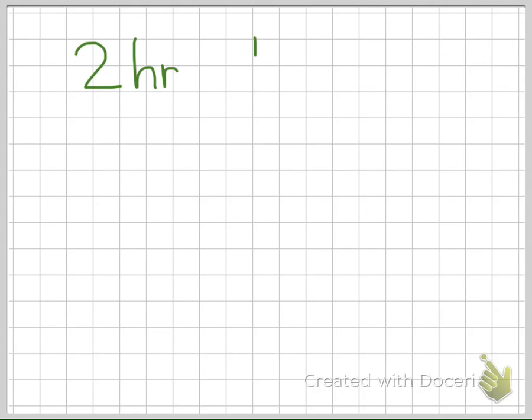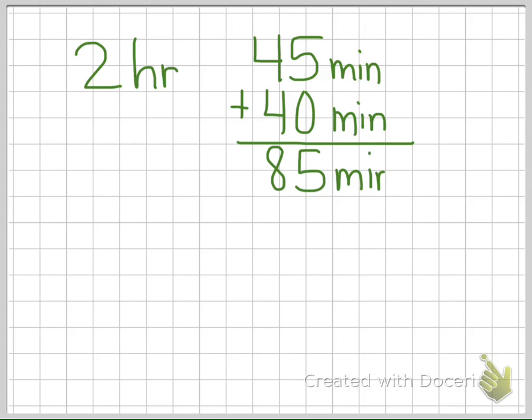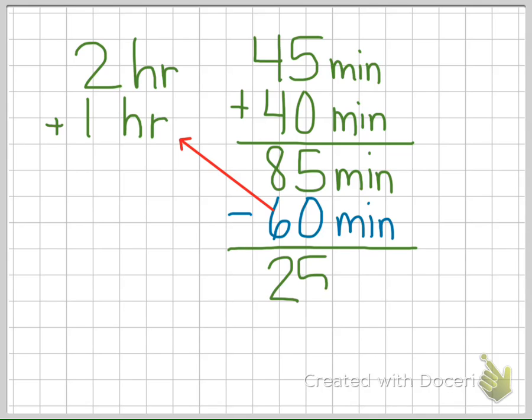To calculate how much time has passed between your start and end time, you add the hours and minutes. If you get a larger number than 60 for the minutes, you'll need to convert minutes to hours by subtracting 60, because there are 60 minutes in an hour. When you get a number smaller than 60, that is the number of minutes in your elapsed time.